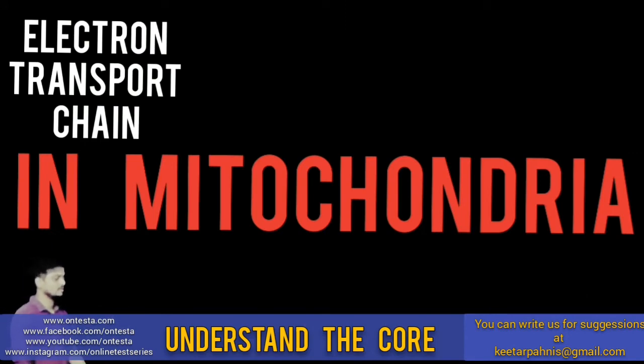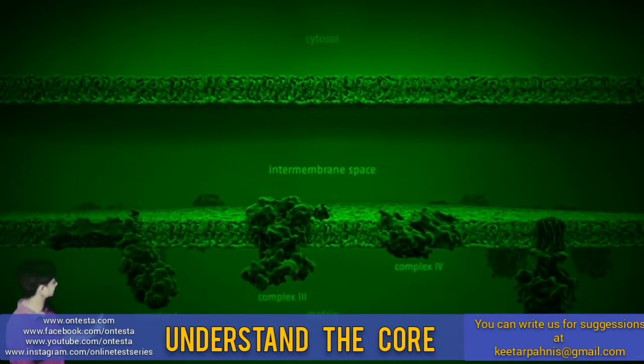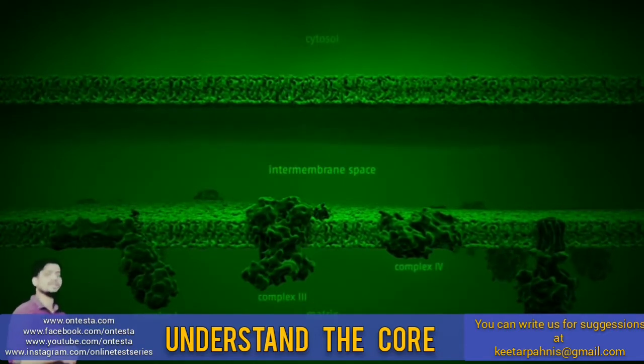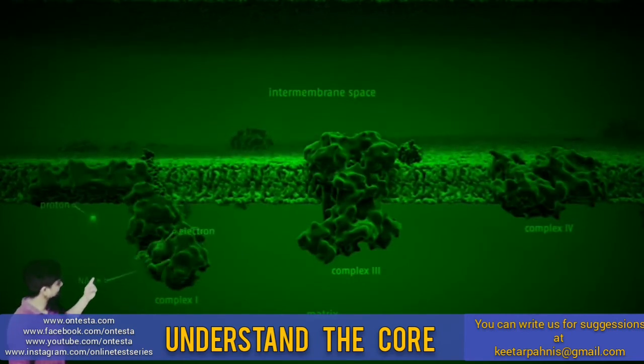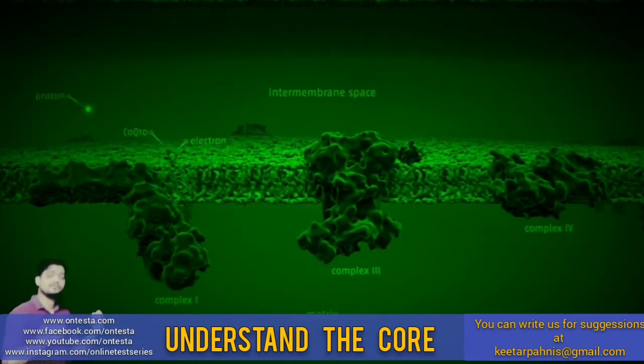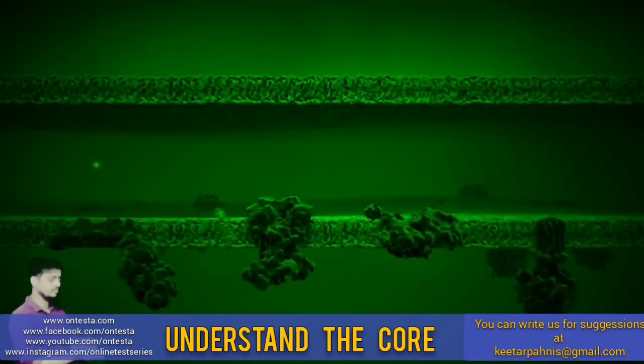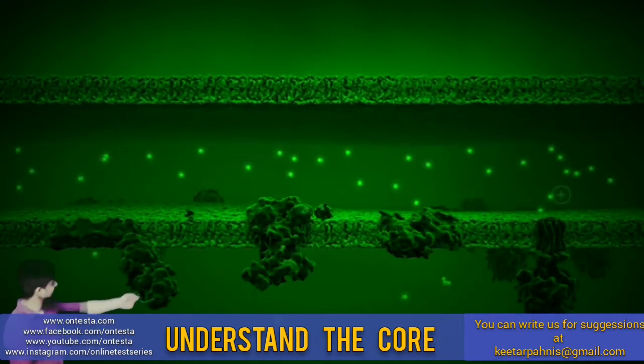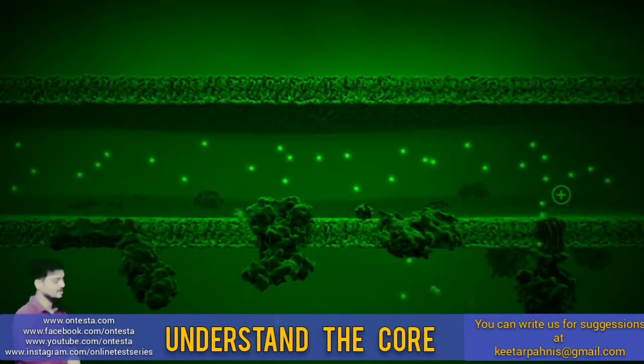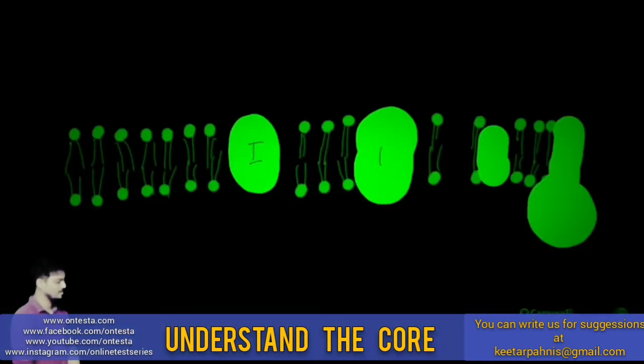Let's understand the electron transport chain in mitochondria. It involves several membrane protein complexes. Nutrients provide high-energy electrons in the form of NADH, which are used by the protein complexes to pump up the protons from the matrix to the intermembrane spaces. This continuous pumping creates a proton gradient. These positive protons are attracted towards the negative matrix.